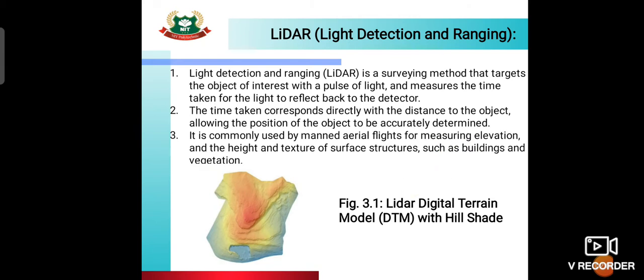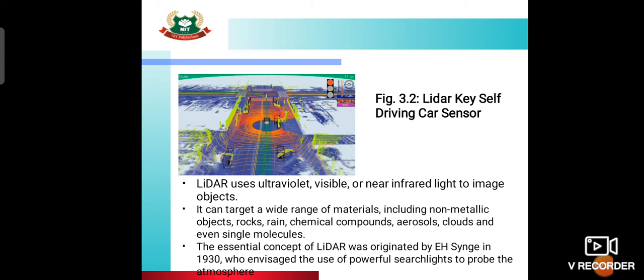Lidar is commonly used in manned aerial flights for measuring elevations and the height and texture of surface structures, such as buildings and vegetation. It is used in aerial flights wherever elevation and height distance measurements are needed. Lidar uses ultraviolet, visible, or near-infrared light to image objects — it captures whatever ultraviolet, visible, or infrared light is nearby.